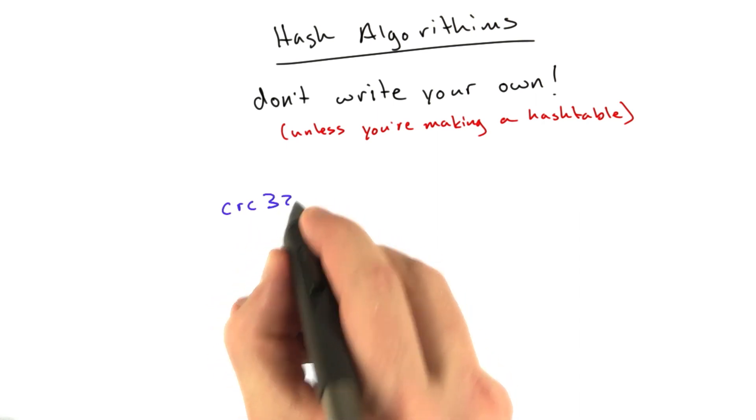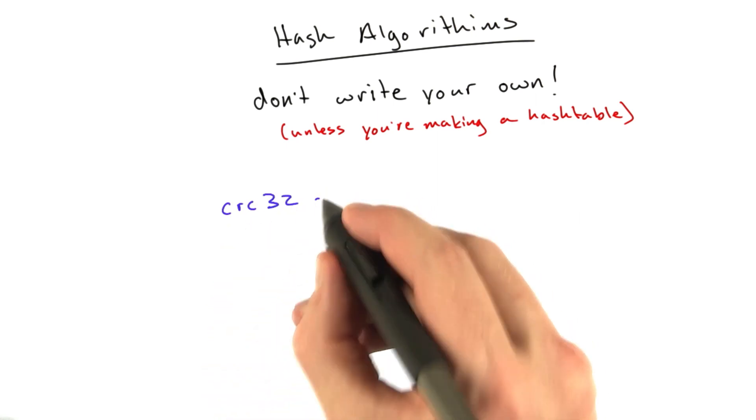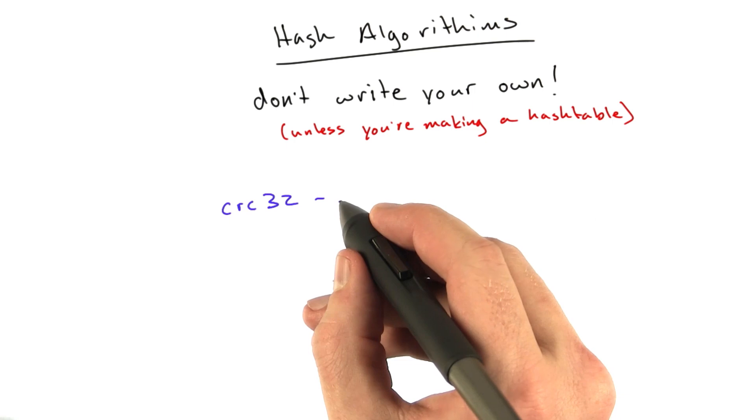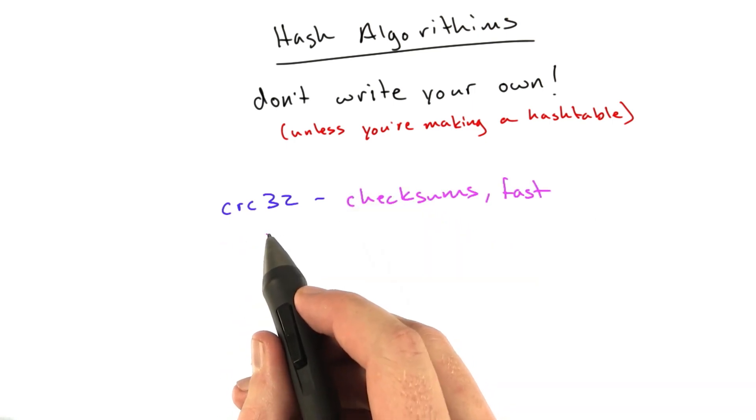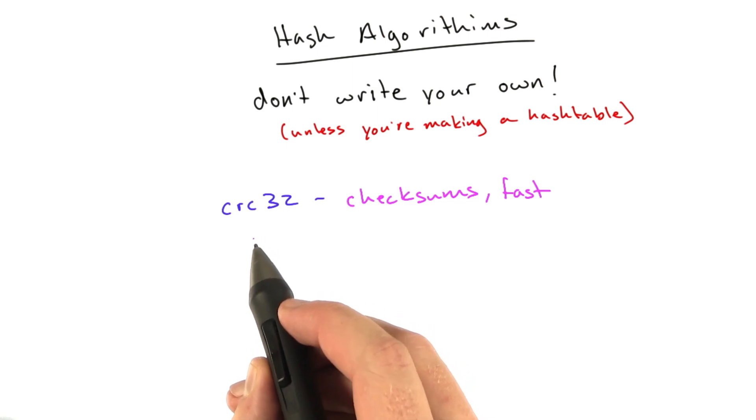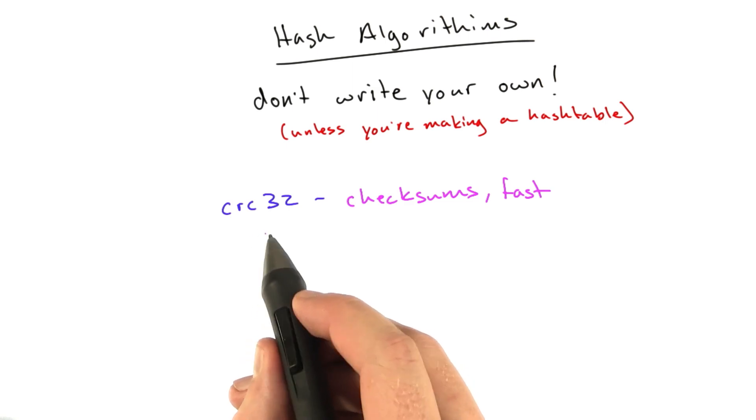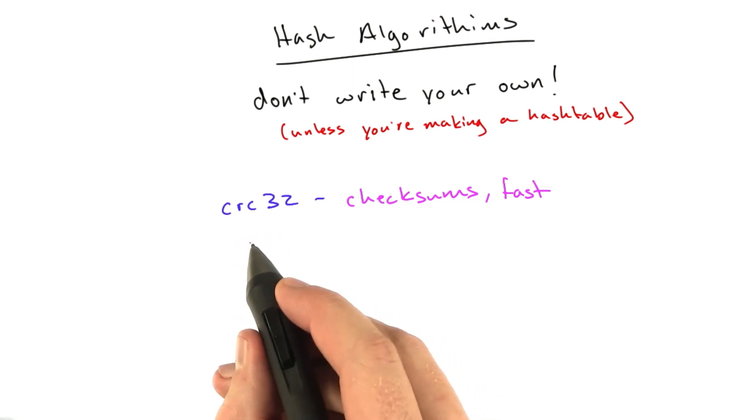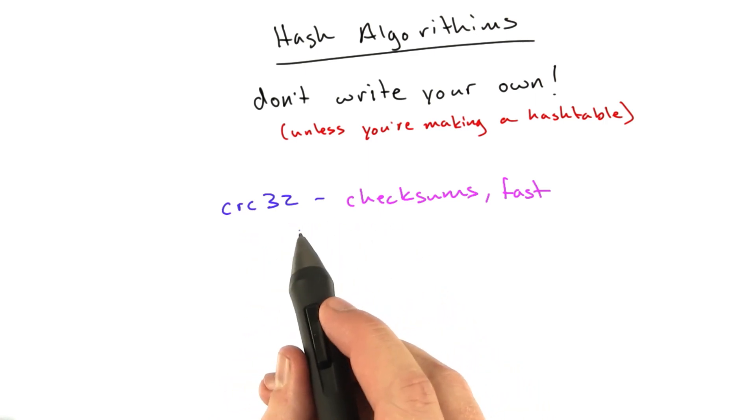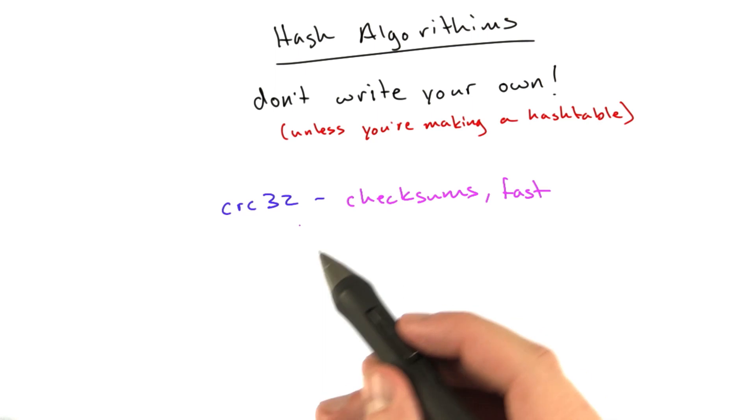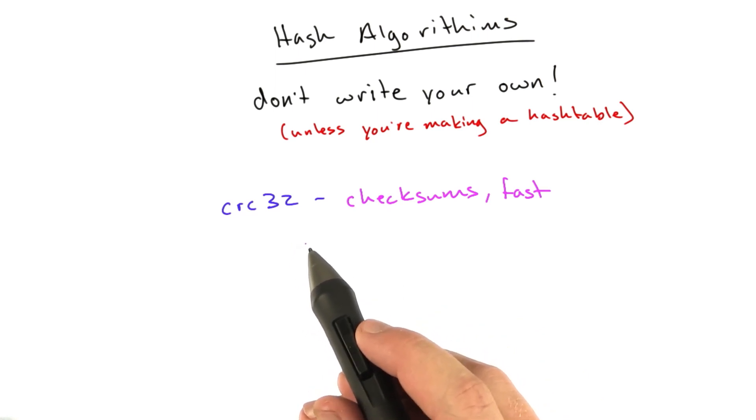Some popular algorithms are CRC32, which is basically designed for checksums. If you were to send somebody a bunch of data, like a big file, you might also include a CRC of that file, and that is basically just a simple way to verify that you've got the entire file and it's not corrupted because you can send a hash easier than you can send a whole file.